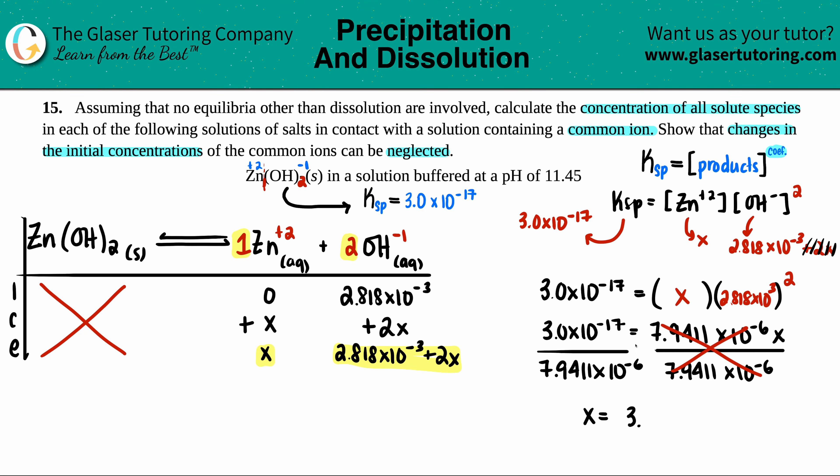So this cancels. And now we have X equals, 3 times 10 to the negative 17th divided by 7.94 times 10 to the negative 6. We get 3.778 times 10 to the negative 12th. You see how small that number is? So the change is not that great.